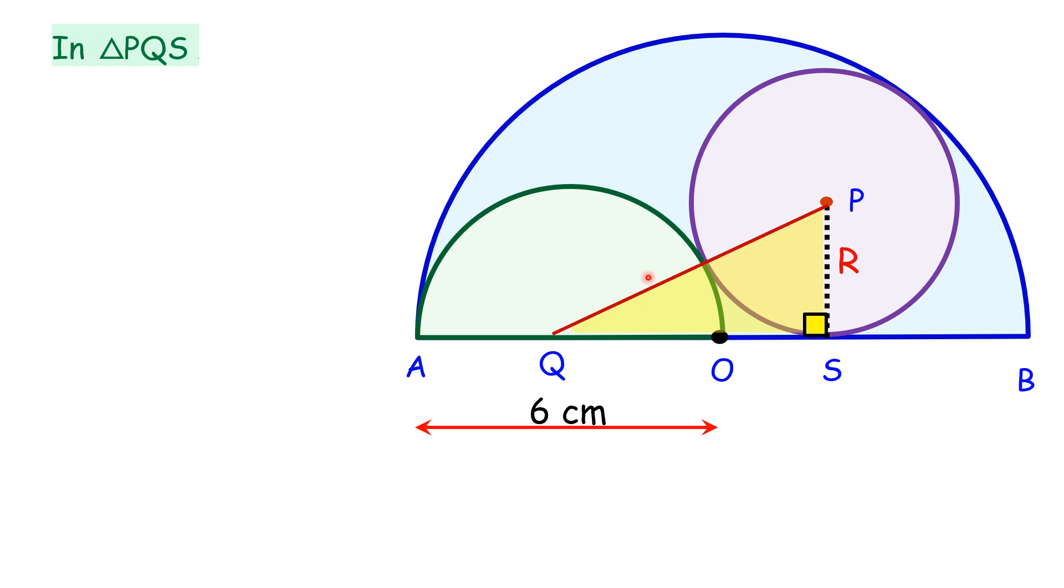This length is 3 cm, the radius of the semicircle, and this is radius of the purple circle. So this full QP is 3 plus R. QO is 3 cm. OS, let's assume this value as X.